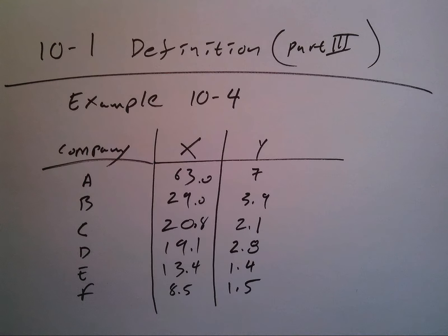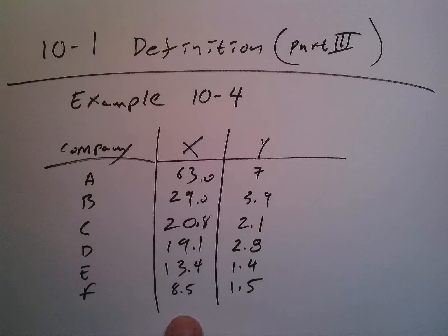All right, 10.1 definition part 3. I'm going to look at example 10.4. Here's the data. Notice that now, instead of just having raw data or a class with frequency, I have two things of interest: an x value and a y value.